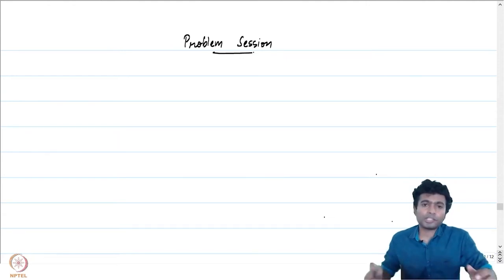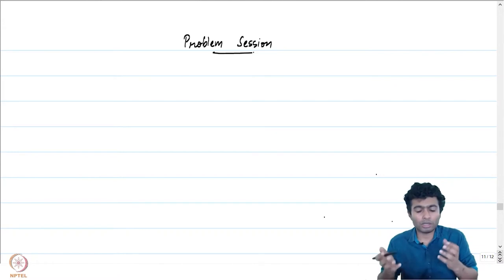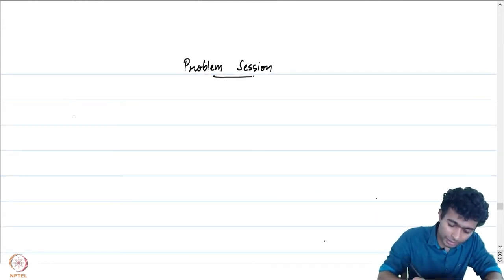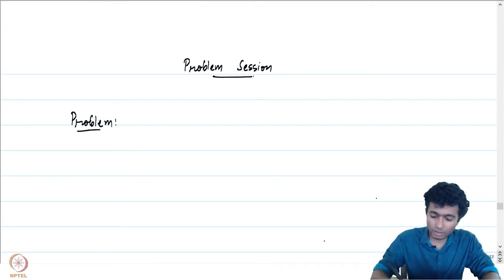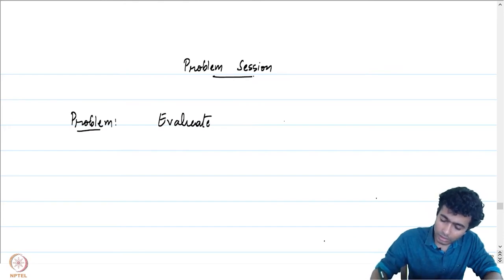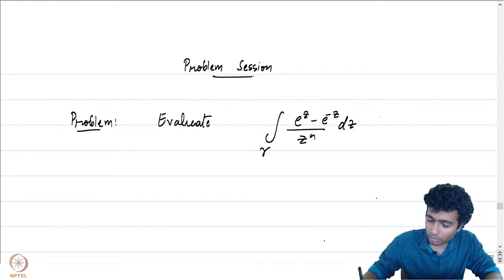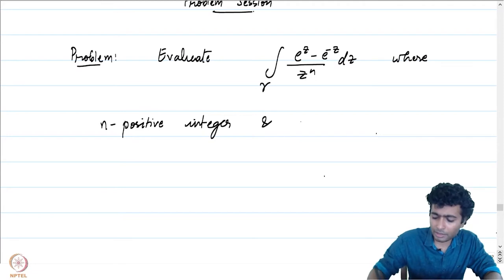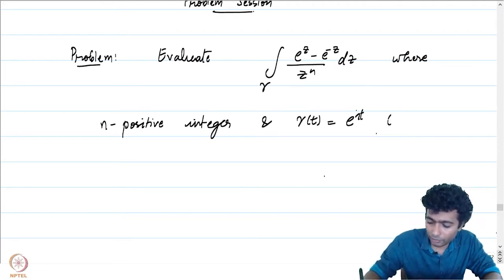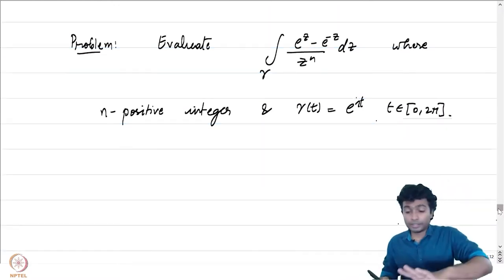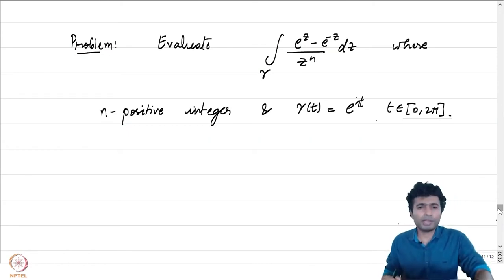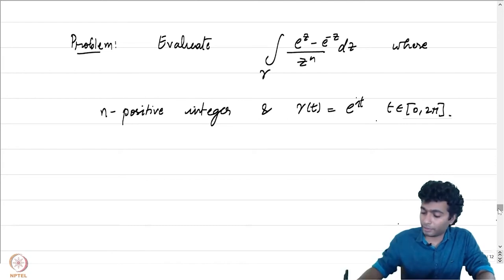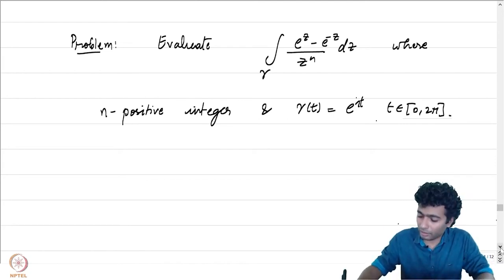Let us now solve a few problems based on the Cauchy integral formula and some of its very powerful corollaries. The first problem is to evaluate the integral of (e^z - e^{-z}) / z^n over γ, where n is a positive integer and γ is the unit circle e^{it} for t in [0, 2π]. The integral a priori looks quite complicated to compute, but now we have some really powerful tools at our disposal. We will be using the Cauchy integral formula to evaluate this particular integral along the curve γ.